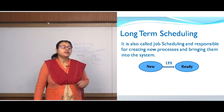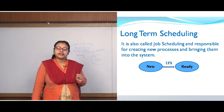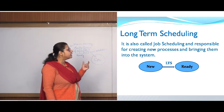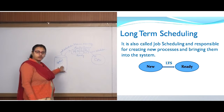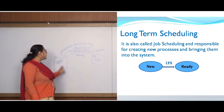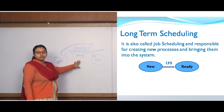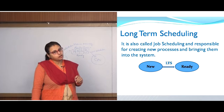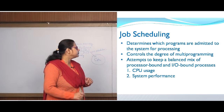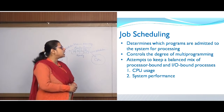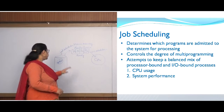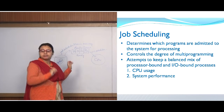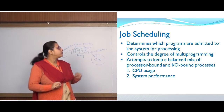Coming to the details of the long term scheduler: it is also known as the job scheduler. The job scheduler is responsible for creating new processes and bringing them into the system. These are new processes stored in your disk, and the job scheduler brings them into the main memory so they become ready. This job scheduler determines which programs are admitted to the system for processing — out of the many new processes on disk, which subset is taken into main memory is determined by the job scheduler.